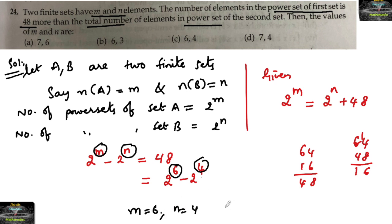So the number of elements in A, n(A) = 6, and n(B) = 4. This is your answer: 6 and 4, option C.